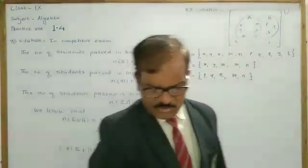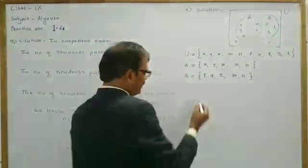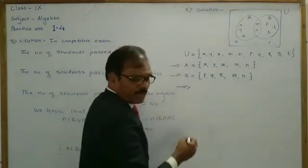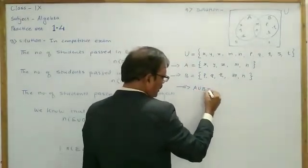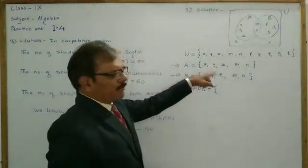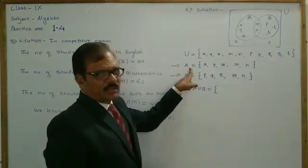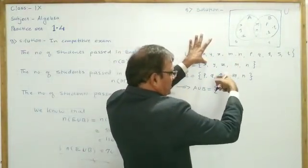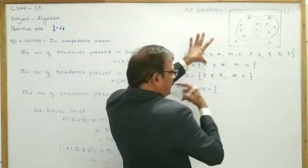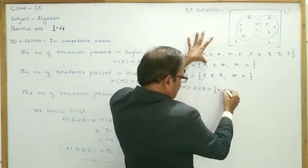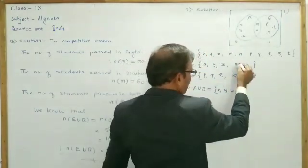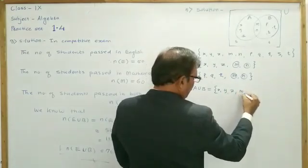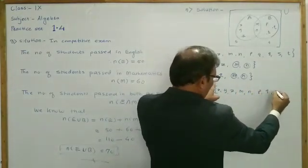We want to find A∪B. Take the combined elements of set A and set B. Don't take repeated elements — if an element comes twice, take it only once, because elements cannot be repeated. So: X, Y, Z, M, N — these two elements are repeated here, so take only once — then P, Q, R.